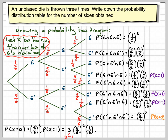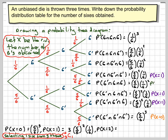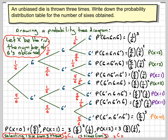The 3 comes from 3C1, because we want 1 six from 3 throws. The probability that X equals 2 uses three branches each giving five-sixths times one-sixth squared, and we can write that as 3C2 because we want 2 sixes from 3 throws. Then the probability that X equals 3 is simply one-sixth cubed.